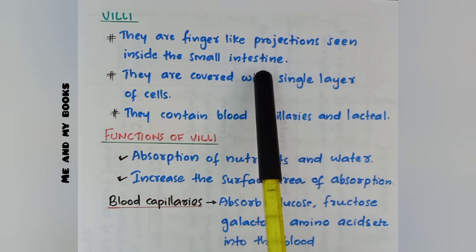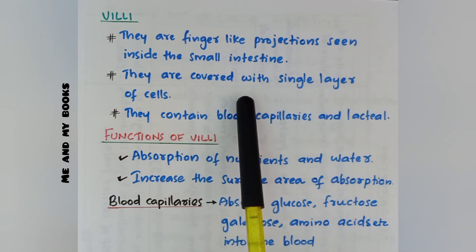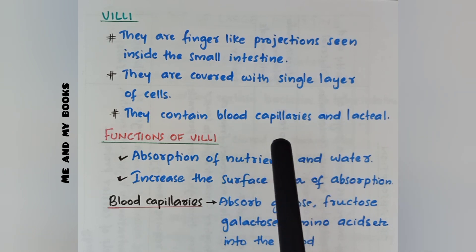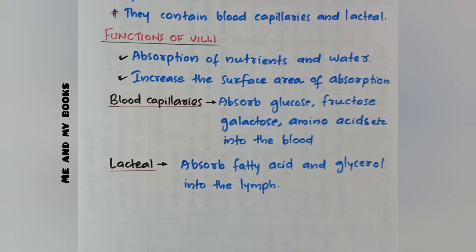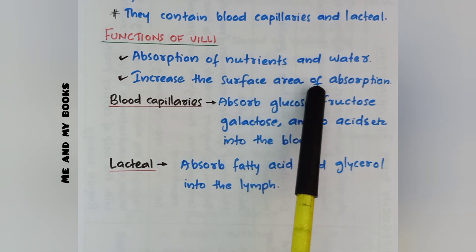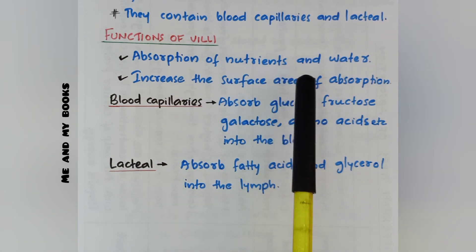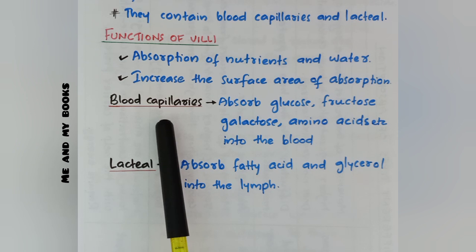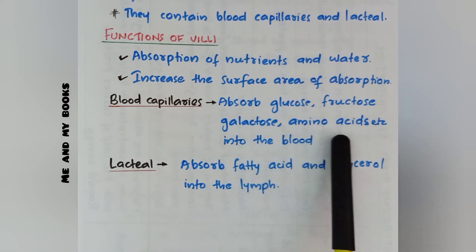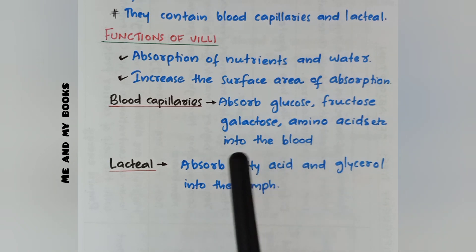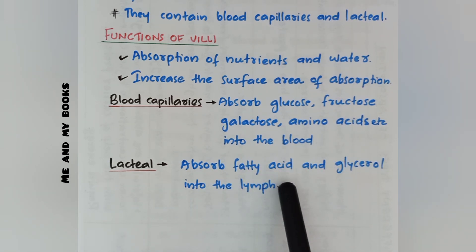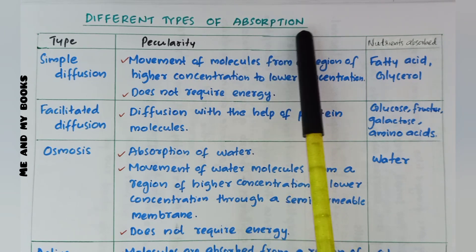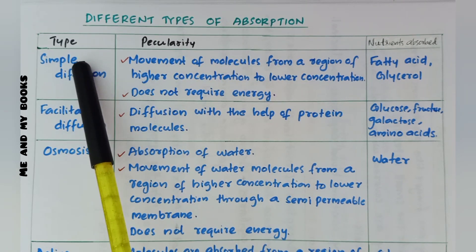Villi are finger-like projections seen inside the small intestine. They are covered with a single layer of cells and contain blood capillaries and lacteals. Their functions: absorption of nutrients and water — 90% of water is absorbed here — and they increase the surface area for absorption. Blood capillaries absorb glucose, fructose, galactose, and amino acids into the blood. Lacteals absorb fatty acids and glycerol into the lymph.